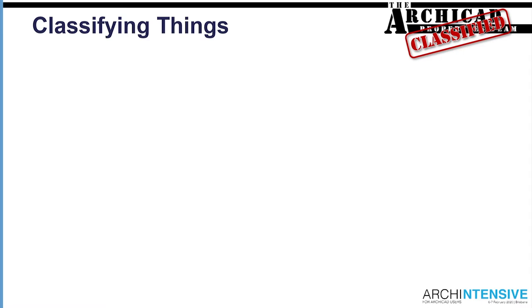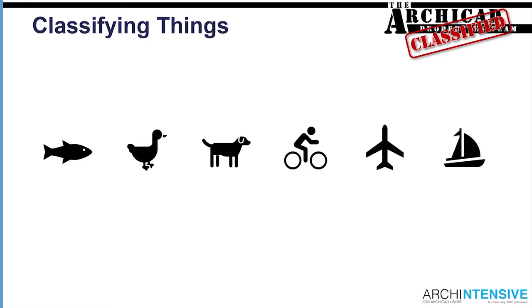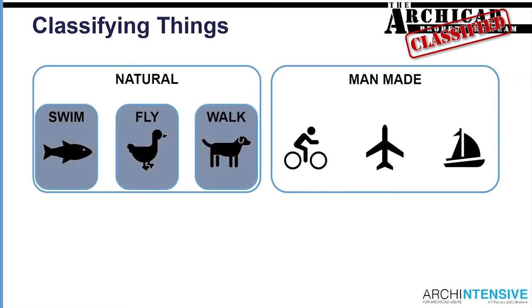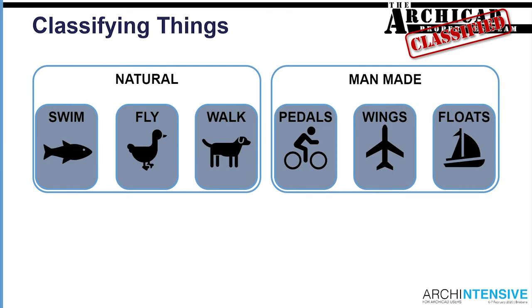Let's go right back to principles and have a look at why we classify things. Through our lives, we encounter all sorts of objects that we interact with every day. We try to come to ways to group these things. So in these objects here, we're going to classify some of them as natural and some of them as man-made. We're then going to look at them and think, within that group, we've got some that can swim, some that can fly, and some that can walk. With the man-made ones, we've got things that use pedals, things that use wings, and things that float.